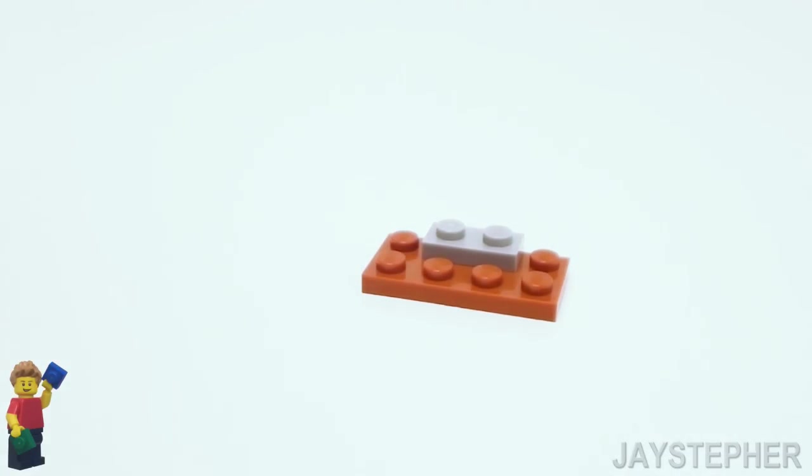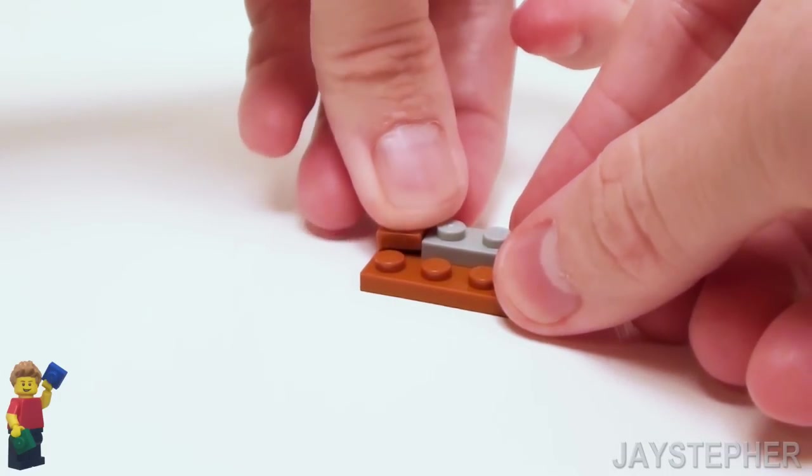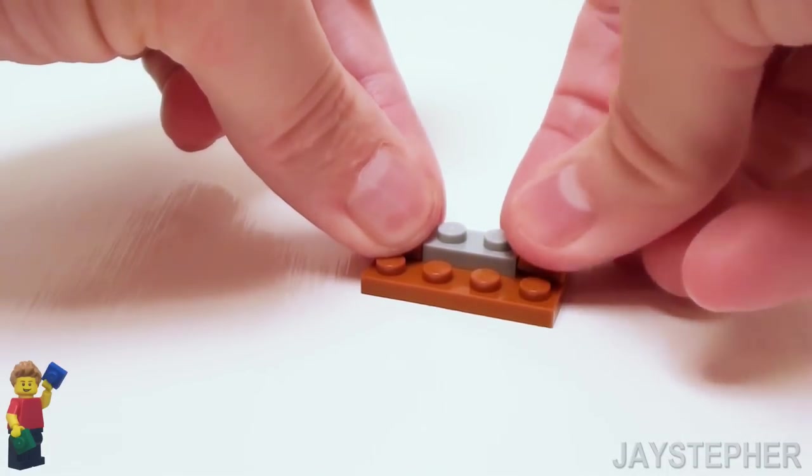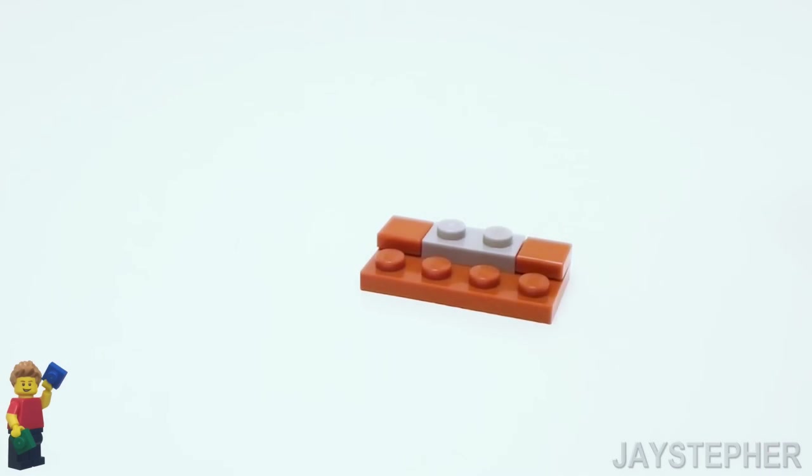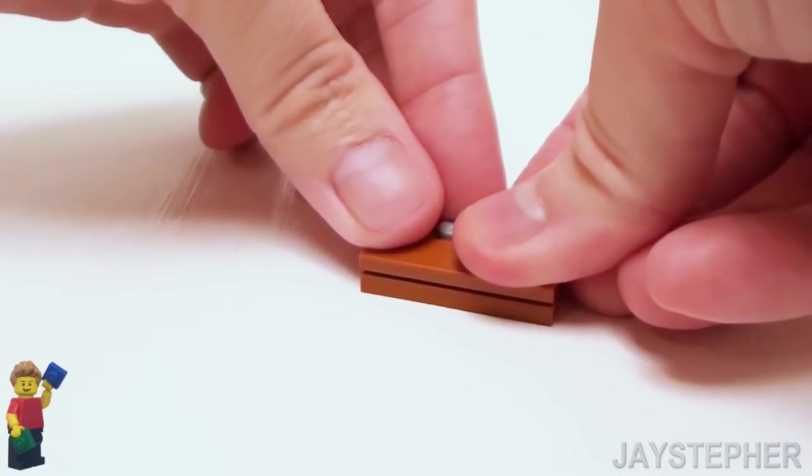Next, place a 1 by 1 flat tile on the left and another 1 by 1 flat tile on the right, followed by a 1 by 4 flat tile on the front.